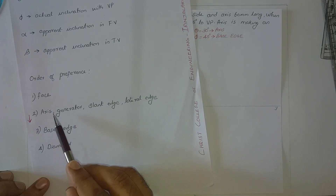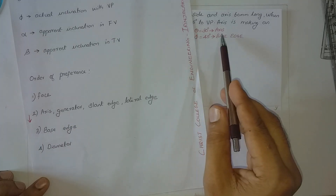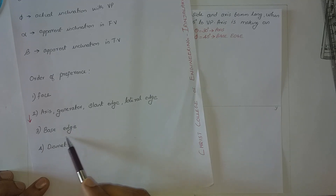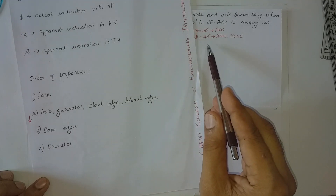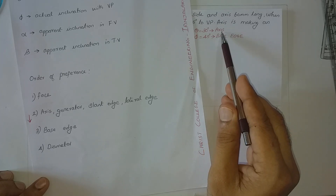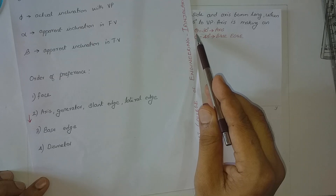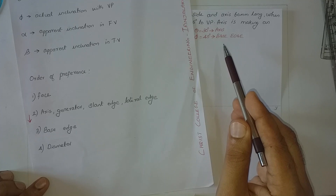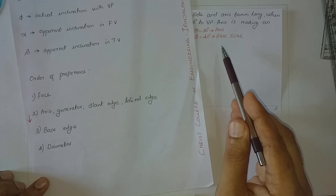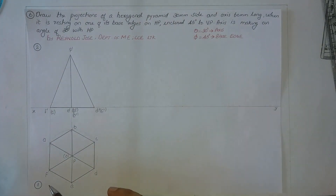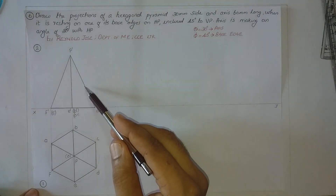As per the order of preference, we have to give the inclination for the axis first — that is, theta has to be given first — and thereafter we will give the inclination with respect to the base edge, that is 45 degrees. Since we are giving inclination with respect to the axis at 30 degrees with HP, the view on HP is the top view, so we will draw the base shape in the top view. This is diagram number one, and thereafter we proceed to diagram number two.